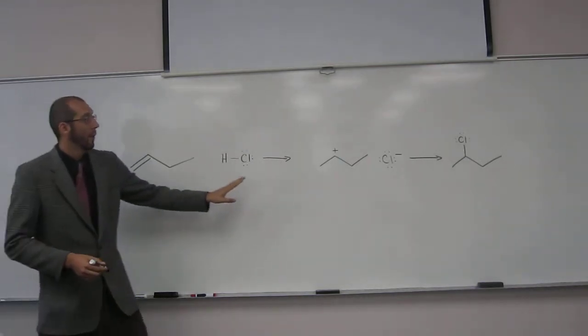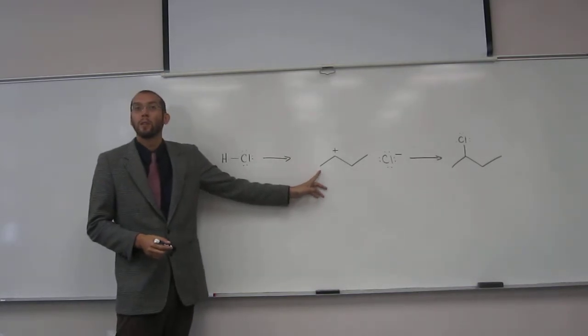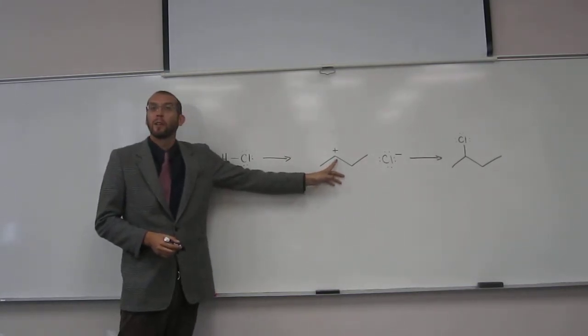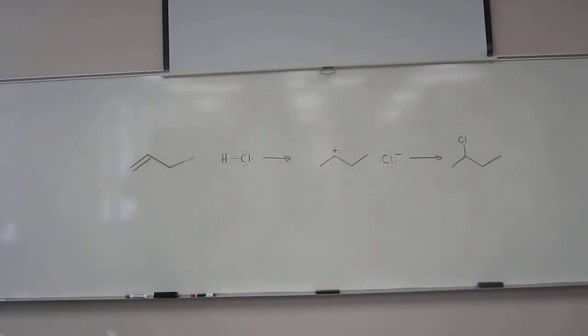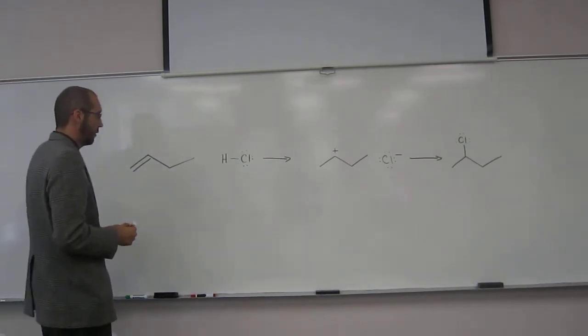Because it became a methyl group. So this is tetrahedral, right? And what's the geometry around this thing? Trigonal planar. Trigonal planar, right? Carbocations have trigonal planar arrangement around molecular geometry.